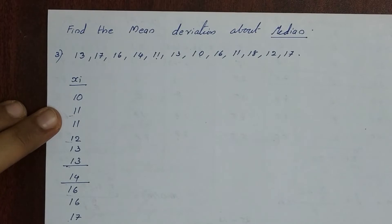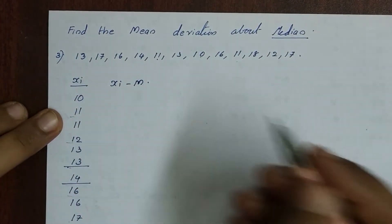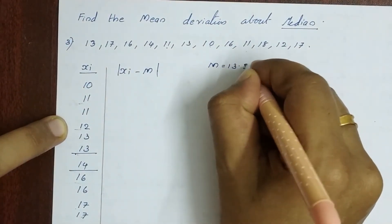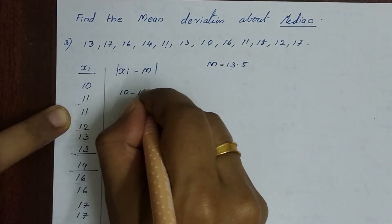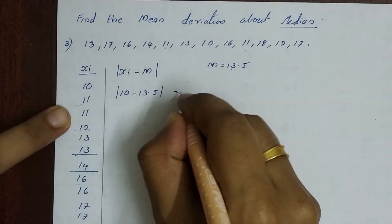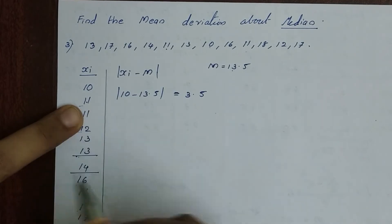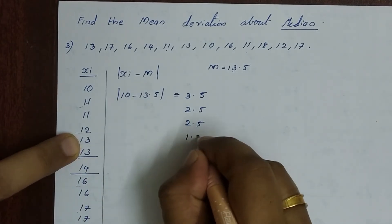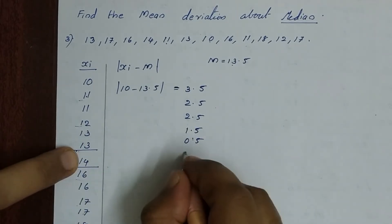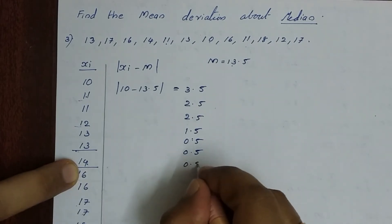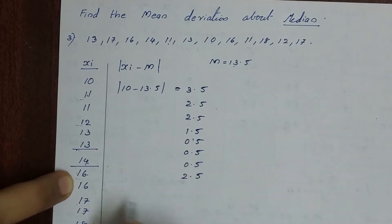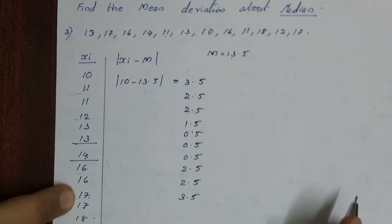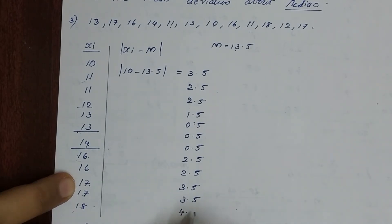In the next step we compute |xi minus median| where m equals 13.5. So 10 minus 13.5, absolute value equals 3.5. Then 11 minus 13.5, absolute value is 2.5, again 2.5. Then 12 minus 13.5 is 1.5. Then 13 minus 13.5 is 0.5, again 0.5. Then 14 minus 13.5 is 0.5. Then 16 minus 13.5 is 2.5, again 2.5. Then 17 minus 13.5 is 3.5, again 3.5. Then 18 minus 13.5 is 4.5.